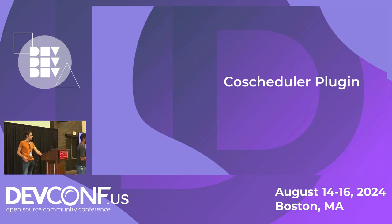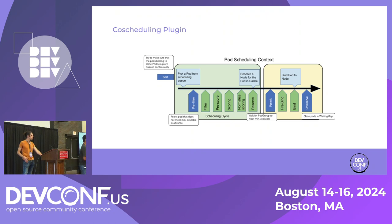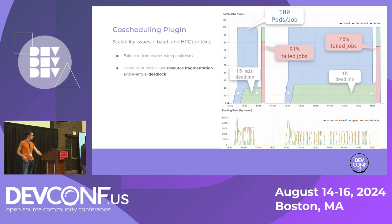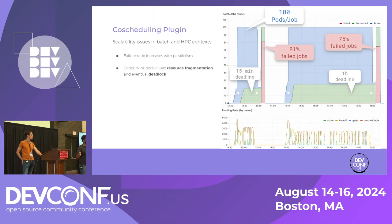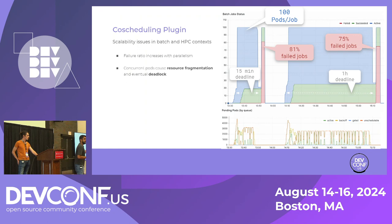If the default Kubernetes scheduler doesn't work well for us, let's use something called the co-scheduler plugin. What the co-scheduler plugin gives us is gang scheduling capabilities, which basically lets Kubernetes know: 'I have a group of pods to place at the same time, so don't schedule a pod unless you can schedule all the pods in this group.' We changed the test to 100 jobs with 100 pods each. Theoretically it should work much better. But we ended up with 81% of jobs failing. Increasing the deadline to one hour still left 75% of jobs failing.